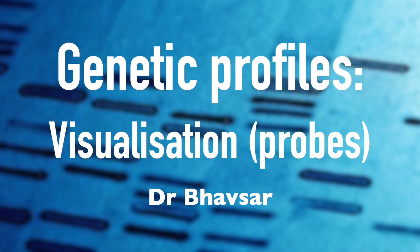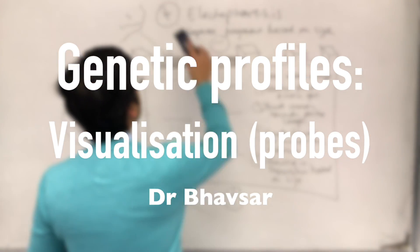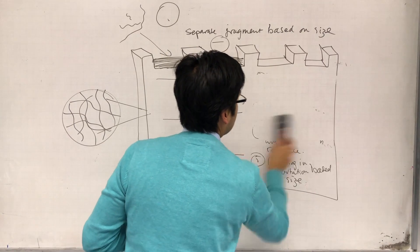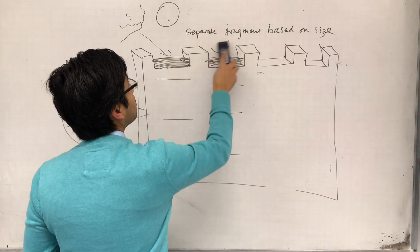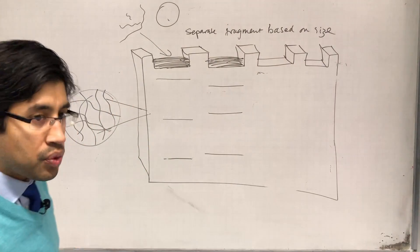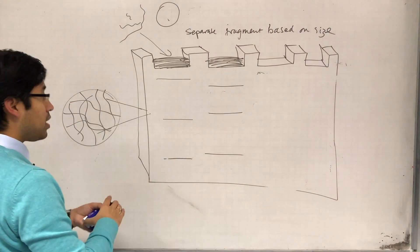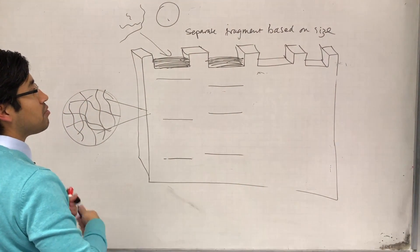Last thing, visualizing the DNA. Now, visualizing is important because we need to be able to say which STR is which. So we can look at the bands but it's not really telling us a lot of information.